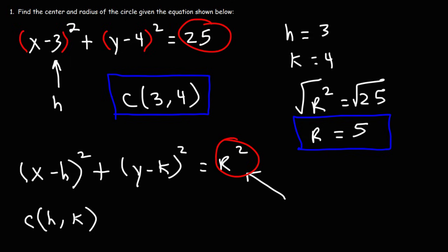So that's how you can find the center and the radius of the circle, given the standard equation. Now, let's work on another example. So let's say we have (x + 2)² and then plus (y - 5)² and this is all going to be equal to 49. So feel free to pause the video and identify the coordinates of the center of the circle and also the radius.